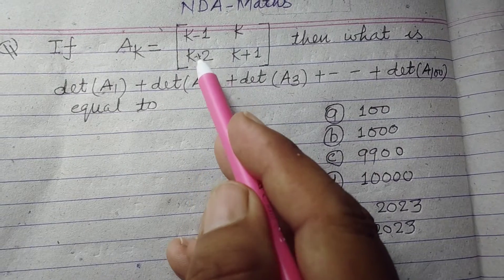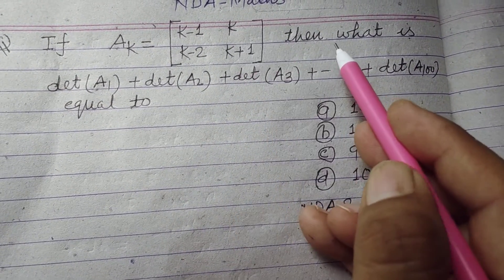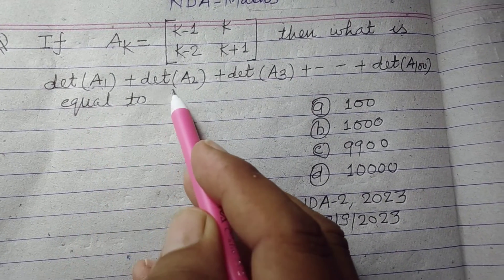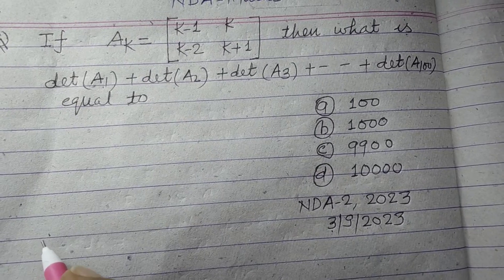If Ak equals the matrix k-1, k in the first row and k-2, k+1 in the second row, then what is det(A1) + det(A2) + det(A3) and so on up to det(A100)?